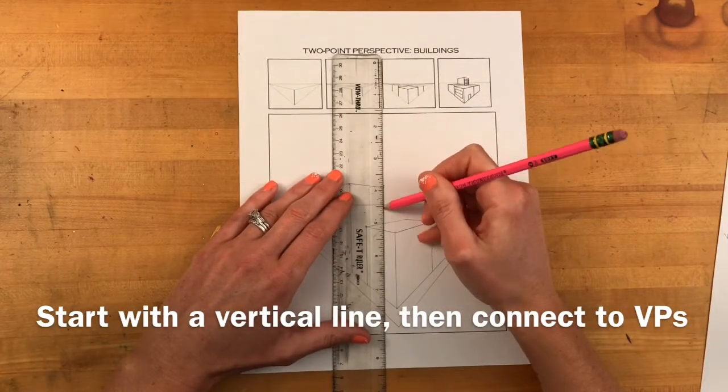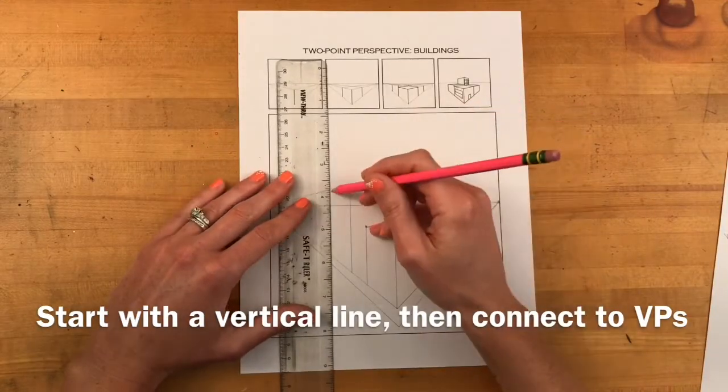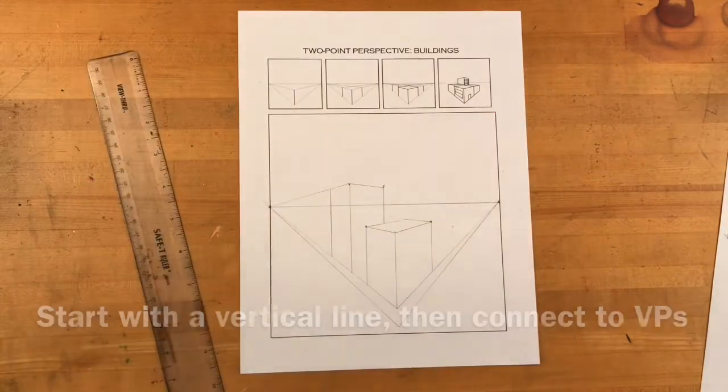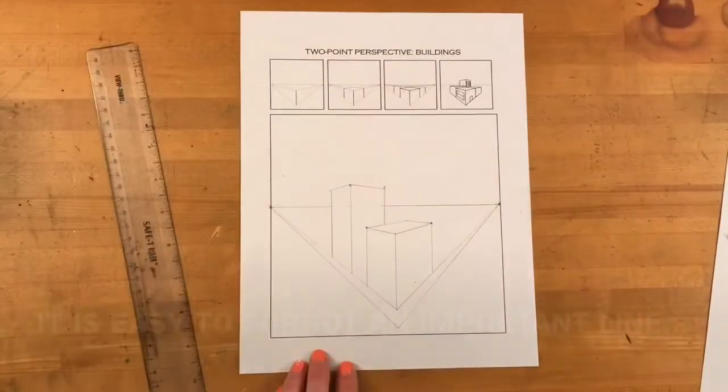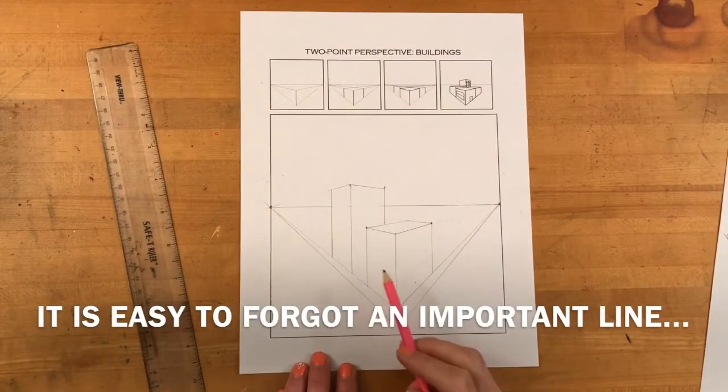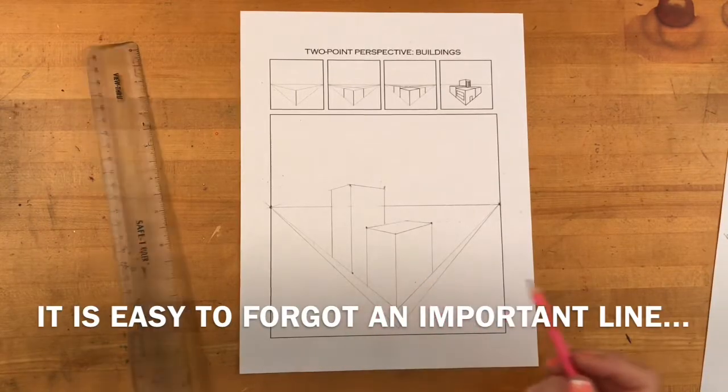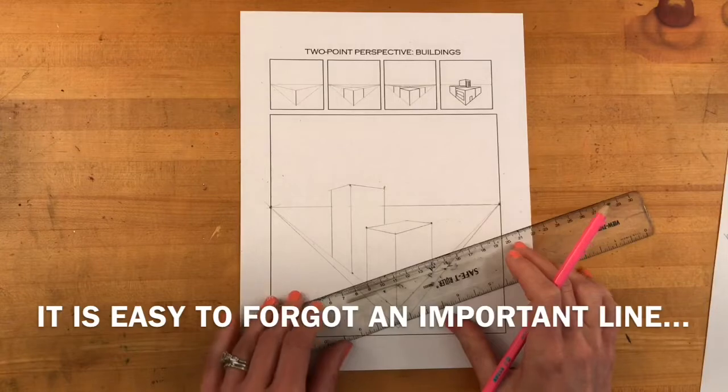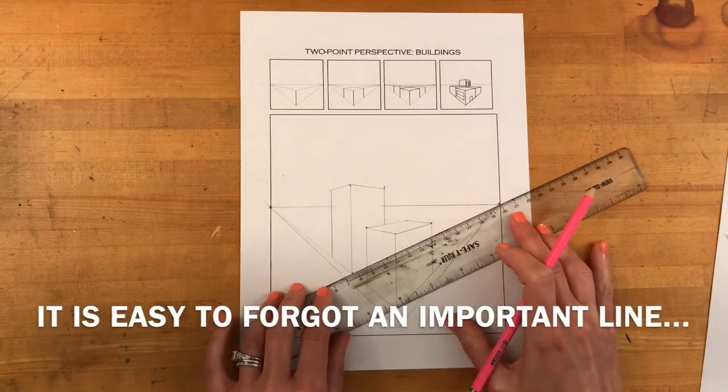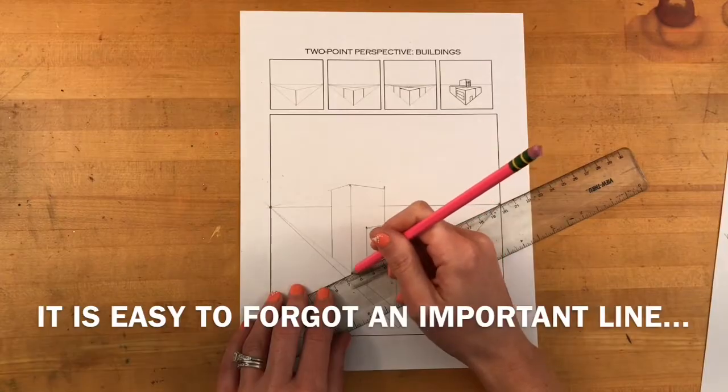And you're going to see the most common mistake made in two-point perspective building drawings. Now look here. It's easy to forget an important line. The bottom of that first corner, that first middle line I drew, needs to be drawn towards the vanishing point as well to show the bottom of the right side of the building.